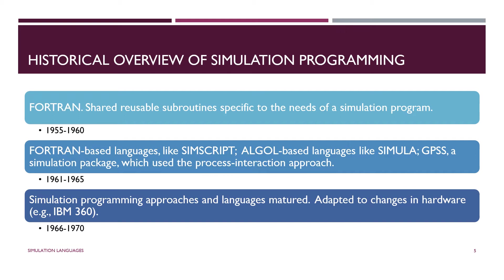The history of simulation mirrors the history of electronic computers. Back in the 20th century, between 1955 and around 1960, the mathematical programming language of choice was Fortran. Simulation researchers shared subroutines with each other — pieces of code that could be used for simulation as part of your Fortran program or library — much the same way that you can download a library in Python or C++ today.